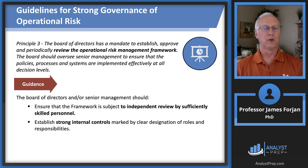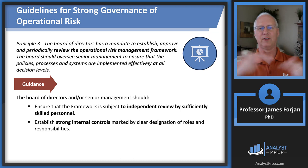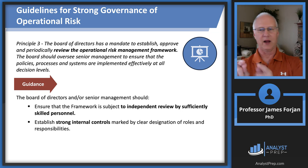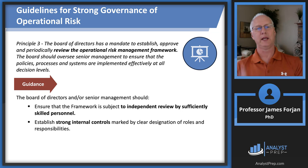Principle 3 requires the board to review the operational risk management framework. Think of a big flowchart of decisions and processes with arrows going every which direction. It's the board's responsibility to check whether each arrow is pointing correctly. The only way that can work is if we have strong internal controls, characterized by individuals and teams who have clear responsibilities.